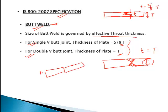So if A1 is 18 mm and A2 is 16 mm, we obviously take the smaller one. Always you have to take the smaller plate thickness for the design.